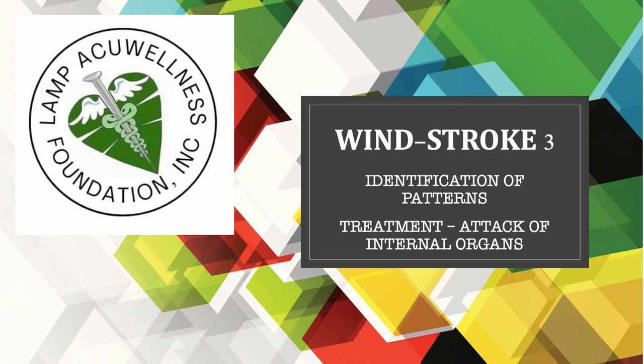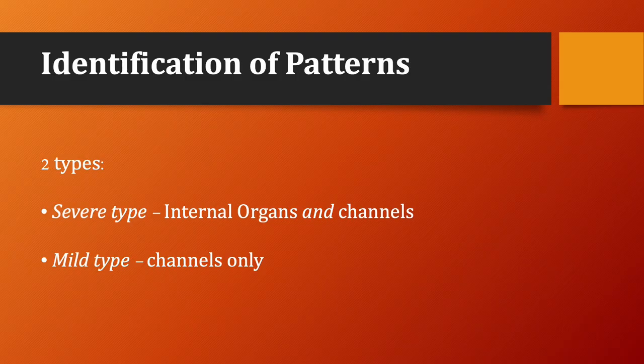Today we will talk about identification of patterns and treatment for attack of internal organs. The most important differentiation in windstroke is between that which attacks the internal organs and channels and that which attacks only the channels. According to this distinction, there are two types of windstroke: severe type, which attacks the internal organs and the channels, and mild type, which attacks only the channels.